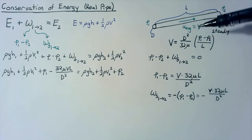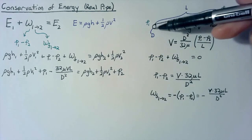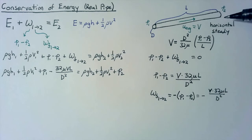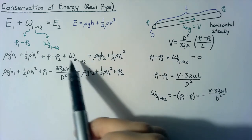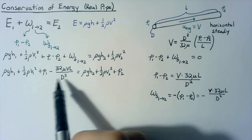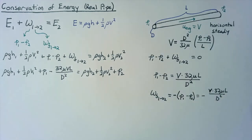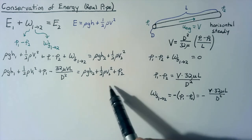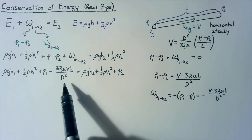If we have some flow moving from one to two, the work done by friction is going to take away energy between those two states. So compared to ideal flow, state two is going to have less energy because of the frictional losses.